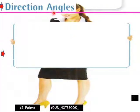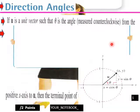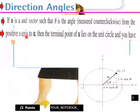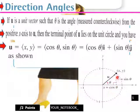Direction angles: if u is a unit vector such that theta is the angle measured counterclockwise from the positive x-axis to u, then the terminal point of u lies on a unit circle, and you have u equals (cosθ, sinθ) equals cosθ i plus sinθ j, as shown in the diagram here.